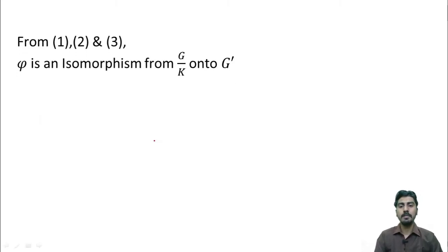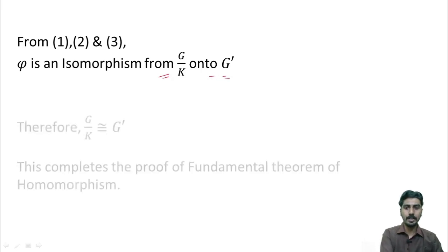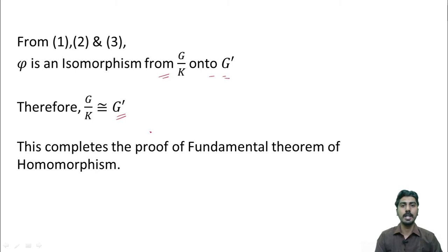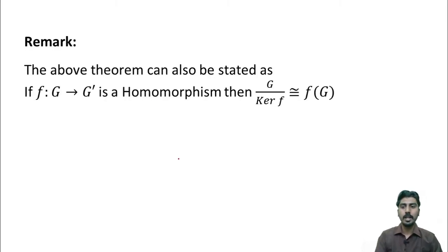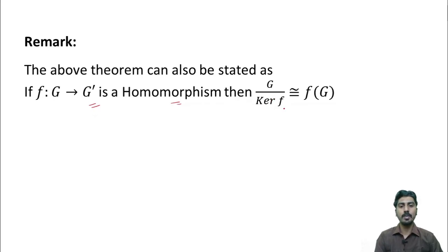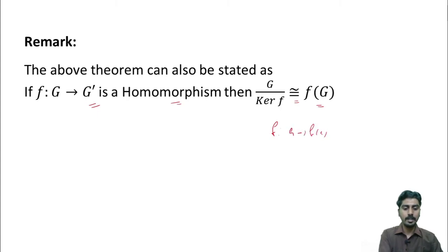From 1, 2, and 3, we conclude that phi is an isomorphism from G by K onto G dash. That is, G by K is isomorphic to G dash. This completes the proof of the fundamental theorem of homomorphism. The above theorem can also be stated as: if f from G to G dash is a homomorphism, then G by kernel of f is isomorphic to f of G. This follows from the fact that the function f from G to f of G is an onto function.